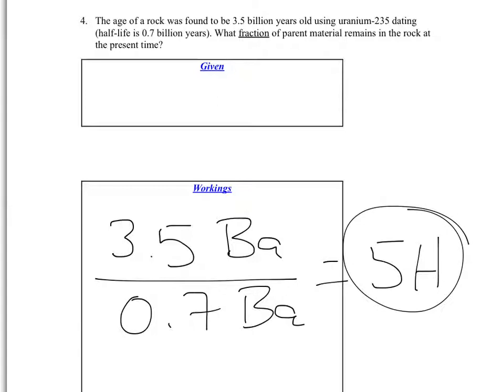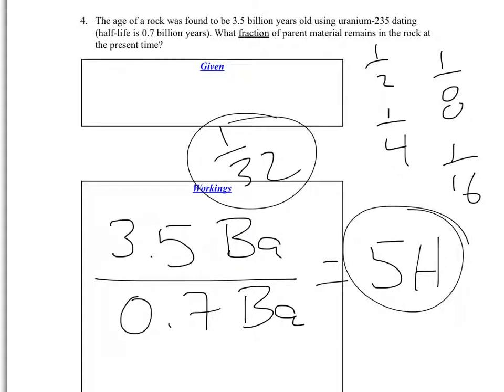So what fraction of parent remains? A half, a quarter, 1 over 8, 1 over 16, and 1 over 32. So 1 over 32 of the original parent material remains in the rock.